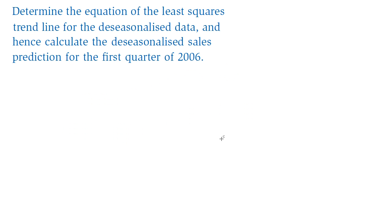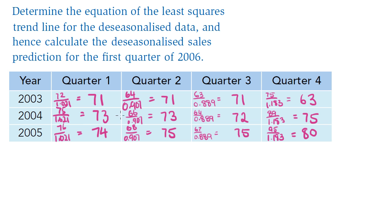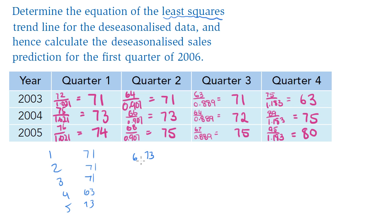Say the question asks you to find the equation of the least squares trend line for the de-seasonalized data and hence calculate the de-seasonalized sales prediction for the first quarter of 2006. We put the de-seasonalized data into the calculator, using x equals 1 for 2003 quarter one, so the data points are (1,73), (2,71), (3,71), (4,63), (5,73), (6,73), and so on down the line.